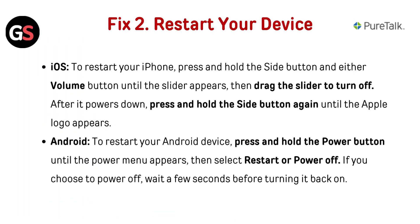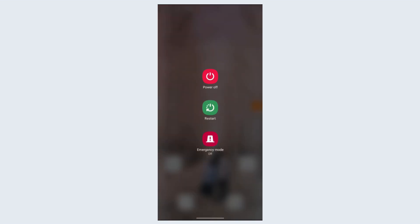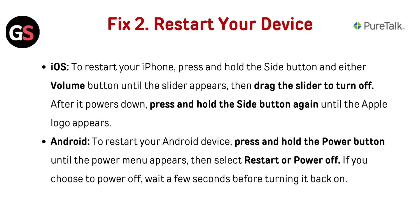Fix 2: restart your device. For iOS, press and hold the side button and either volume button until the slider appears, then drag the slider to turn off. After it powers down, press and hold the side button again until the Apple logo appears. For Android, press and hold the power button until the power menu appears, then select restart or power off. If you choose to power off, wait a few seconds before turning it back on.